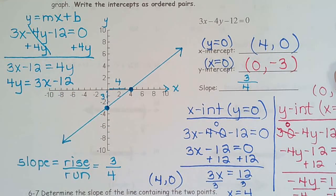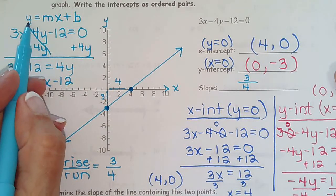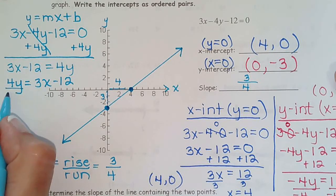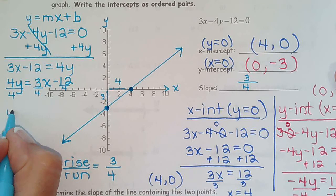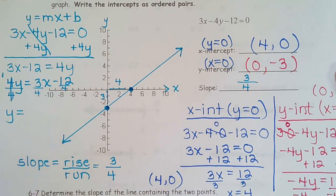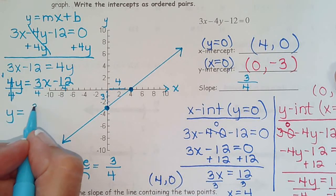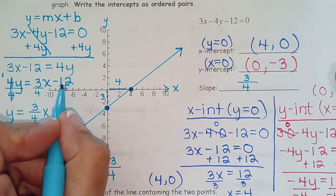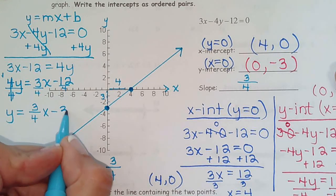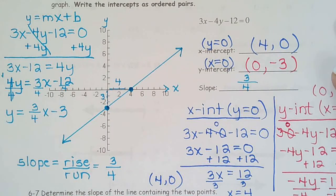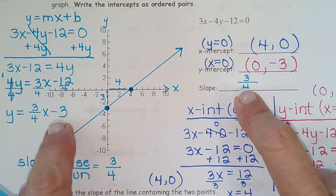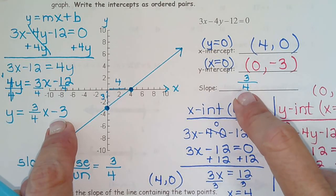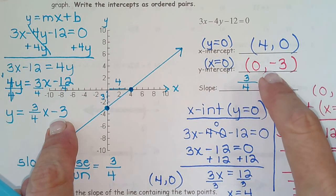So we have 4y equals 3x minus 12. To get y alone, which is what we need, we would divide everything by 4. And let's see what we get. Let's see if it verifies what we have. So this would be 3 fourths x minus 3. So if we've done our work correctly, our slope should be 3 fourths. Boom. And our y intercept should be 0, negative 3. Ding, ding, ding. There we go.